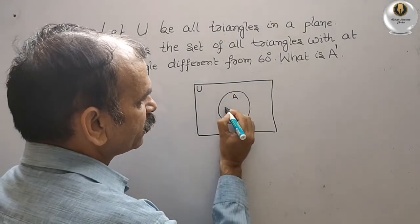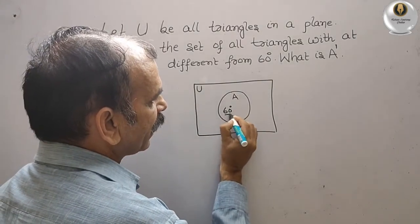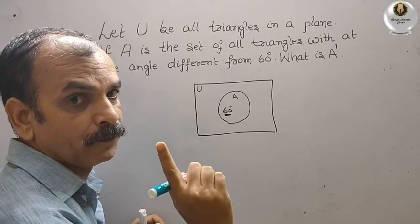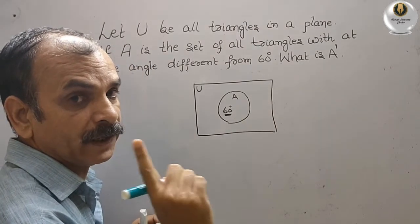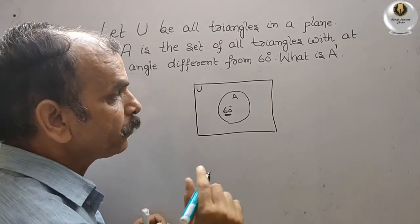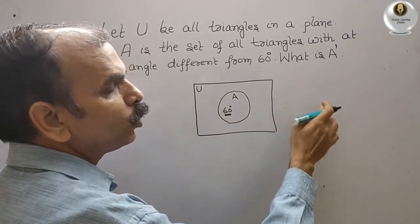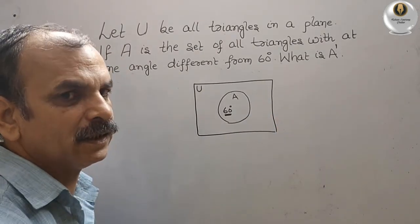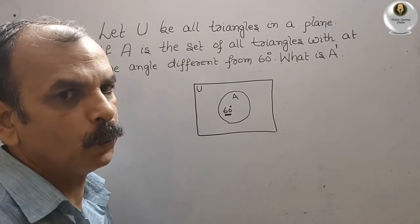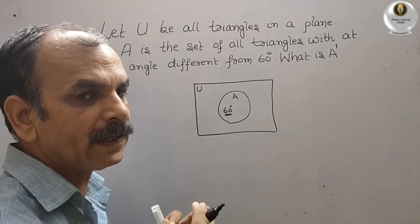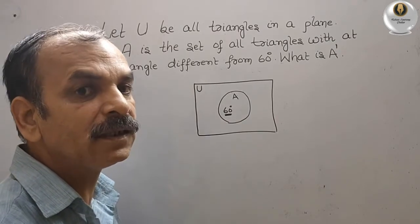So if you see 60 degrees, at least one angle should be different. So suppose we have to make two angles of 60 degrees, can we make? No. So one angle is 60 degrees, that means it's a scalene triangle.